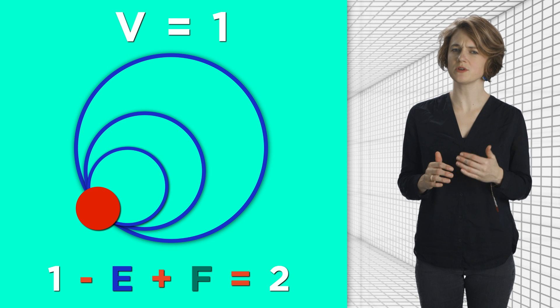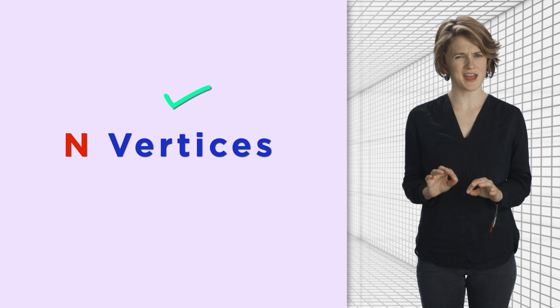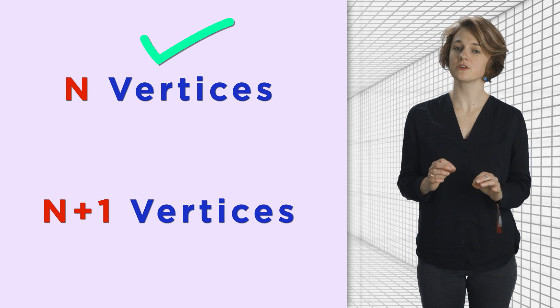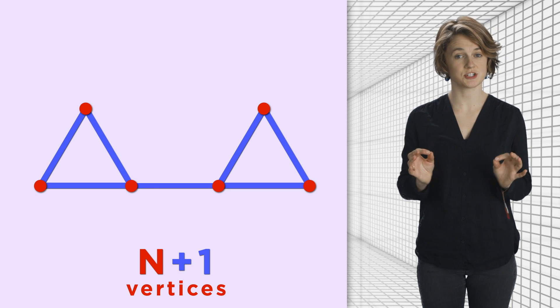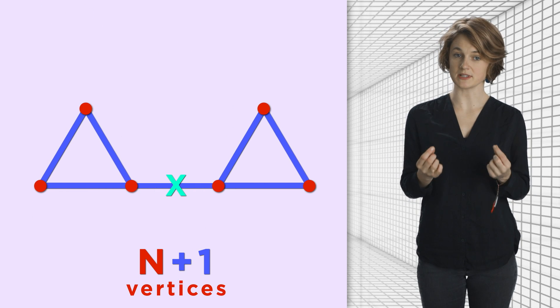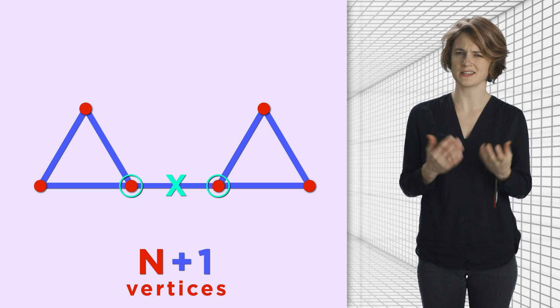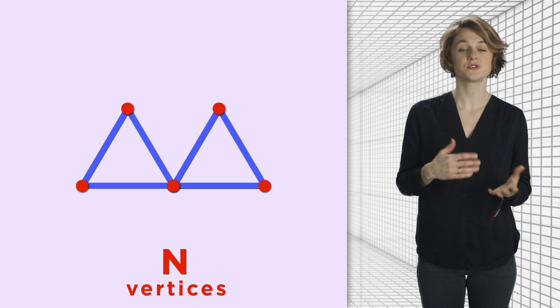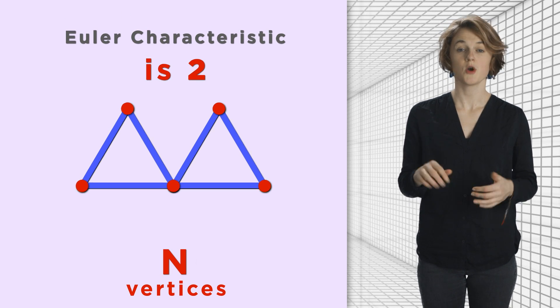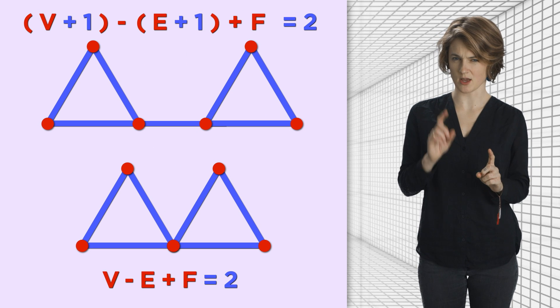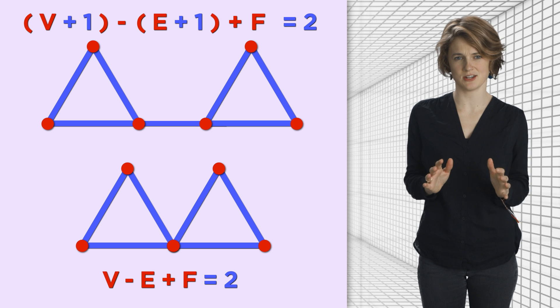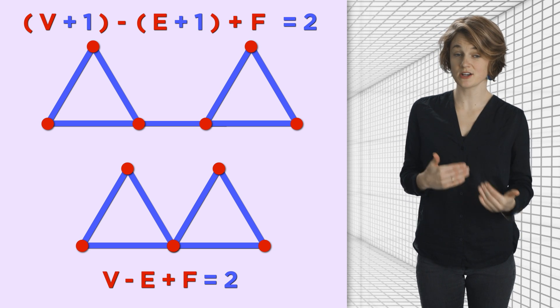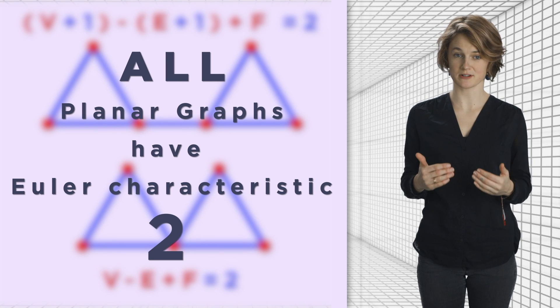Now, assume we know the Euler characteristic formula holds for a graph with n vertices. Now we want to show it's true for a graph with n plus 1 vertices. For your graph with n plus 1 vertices, pick an edge and contract it. This means that you delete the edge and you merge the two vertices at the end. After contracting an edge, our graph has n vertices, so we know that the Euler characteristic is 2. When we contracted the edge, we removed one vertex and one edge. So the Euler characteristic didn't change. It must have also been 2. This proves, by induction, that all planar graphs have Euler characteristic 2.